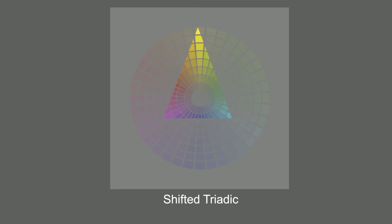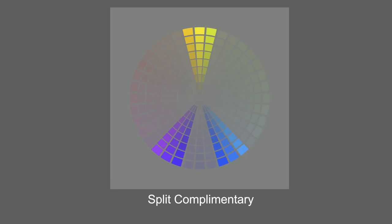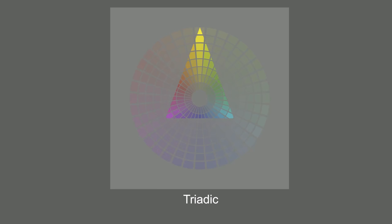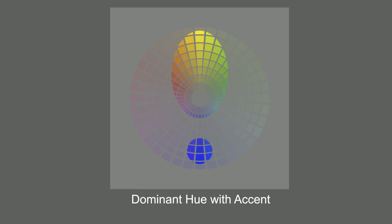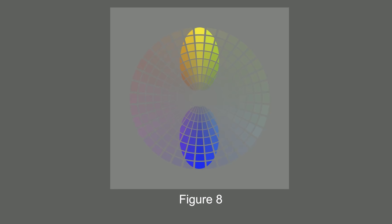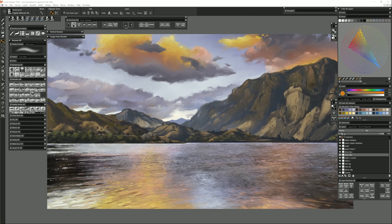The only problem is that most art applications do not offer a gamut masking tool. So I've put together this free universal color gamut masking tool that can be used with any art software that supports layered PSD files with masks. That includes Photoshop, Corel Painter, Clip Studio Paint, Procreate, Rebelle, ArtRage, Paintstorm Studio, Medibang, and more. You can even print this tool for use in traditional painting.